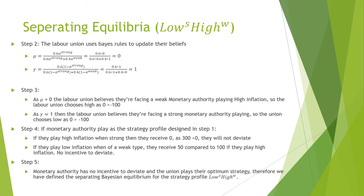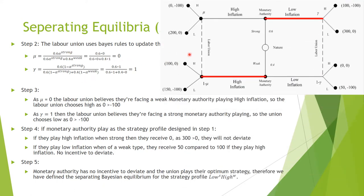Applying those steps to the game: first, we define the strategy for the monetary authority — they play low when they're strong and high when they're weak. Second, we use Bayes' rule to update the beliefs of the labour union. This calculation states that the probability the monetary authority is strong (60% chance) and makes a high inflation announcement, divided by the probability that any type of monetary authority announces high inflation. Alpha-strong equals zero, meaning there is a 0% chance that a strong monetary authority announces high inflation. Based on this, mu equals zero — whenever the monetary authority announces high inflation, there is a 0% chance they are strong.